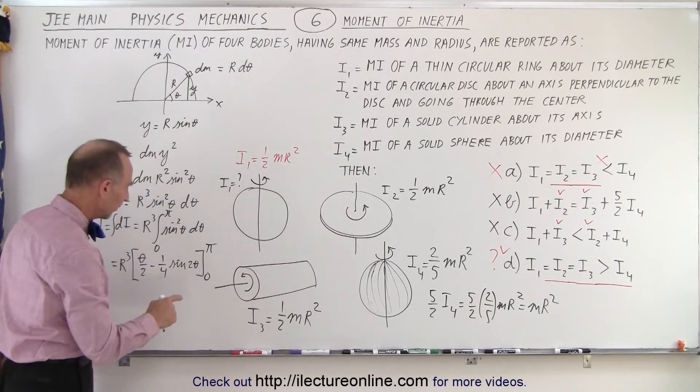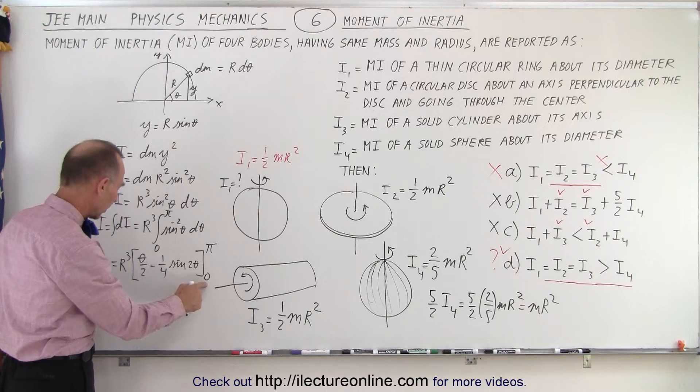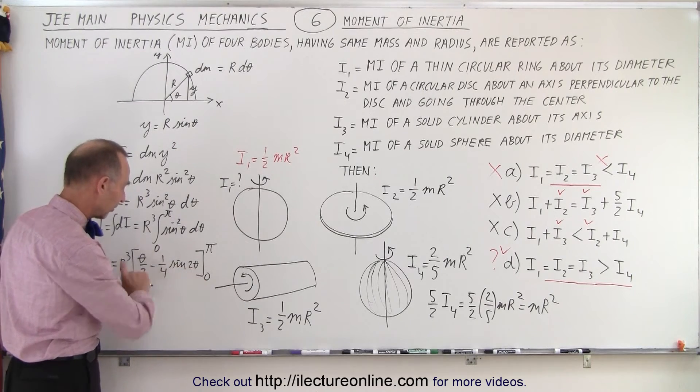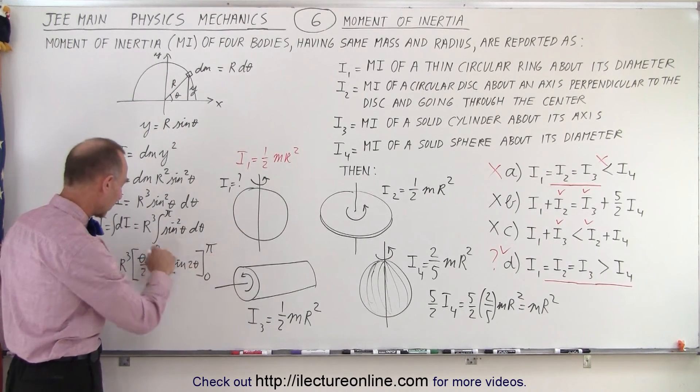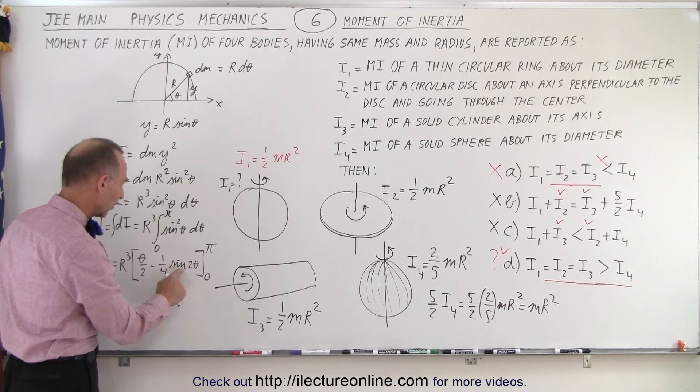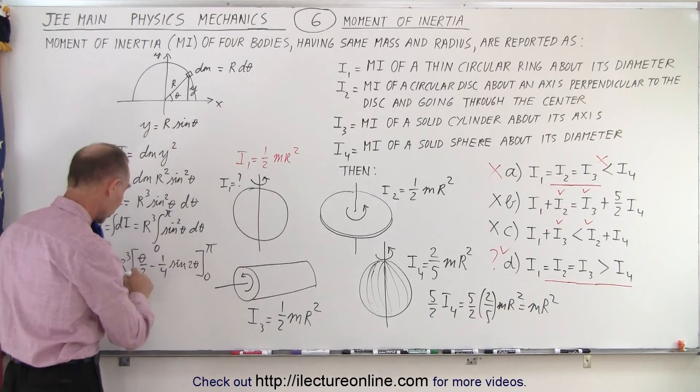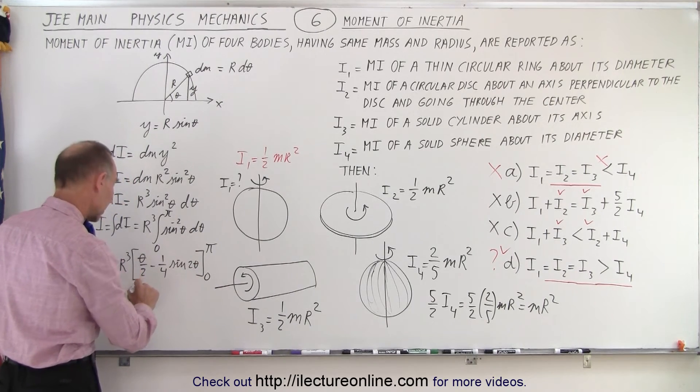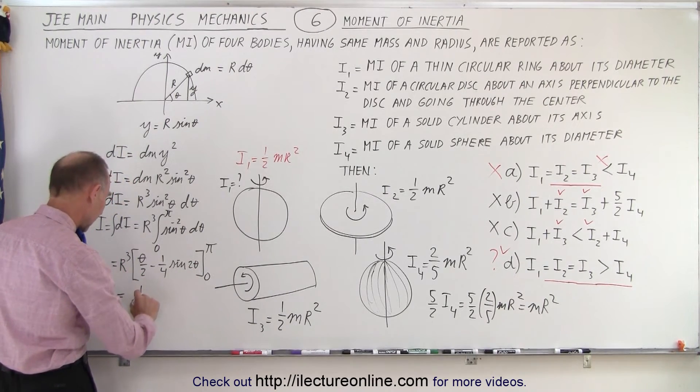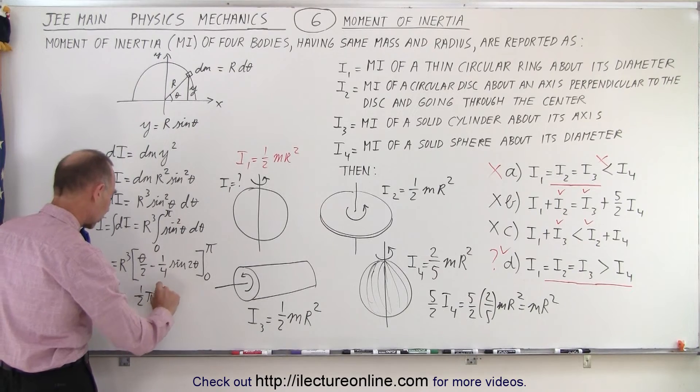And then you realize that when you plug in zero, you get zero here and the sine of zero is zero. So you get zero. When you plug in pi, you get pi over 2. But the sine of 2 pi would be also zero. So the only thing left here is that this would be equal to 1 half pi r cubed.